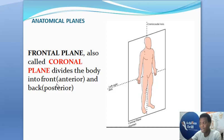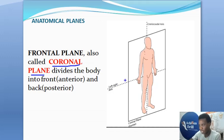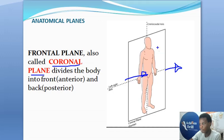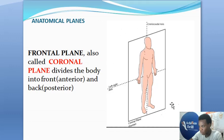The frontal plane — otherwise called the coronal plane — passes through the side of the body, coming from one side and coming out on the other, and it divides the body into front and back, into anterior and posterior. Take a look at this picture: you can see the coronal plane passing through one side of the body, coming out on the other side, and dividing the body into a front and a back.